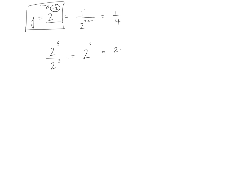You could also have written it like this, where you have 5 2's on the top and 3 2's on the bottom, and these all cancel. So you're left with 2 2's on the top or 4.